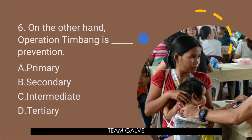Question number six: Operation Timbang — is what level of prevention? Is it A, primary? B, secondary? C, intermediate? Or D, tertiary? Operation Timbang is done in the Philippines to identify members of the susceptible population who are malnourished. Its purpose is early diagnosis and subsequent prompt treatment; hence the answer is letter B, secondary.